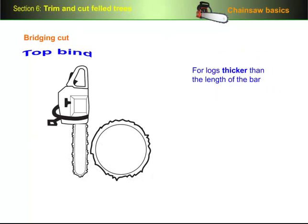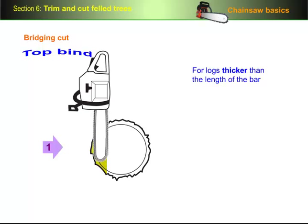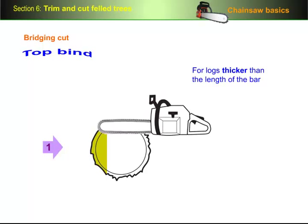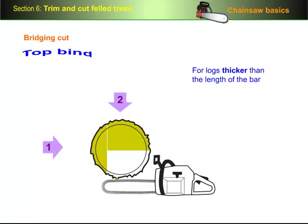For logs that are thicker than the length of the bar, put a cut on the opposite side of the log, and then pull the saw towards you and cut down until the top gap starts to close. Release the trigger and then withdraw the saw from the cut. Then cut from the bottom up.